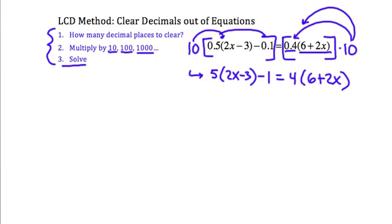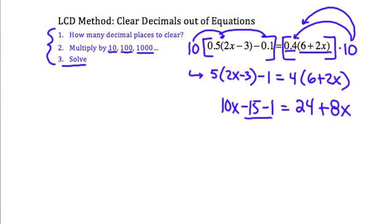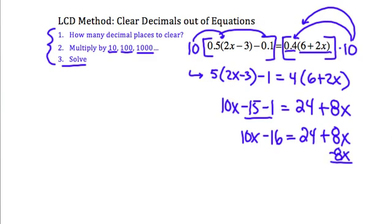I would distribute the 5 on the left: 5 times 2x is 10x, and 5 times negative 3 is minus 15, minus 1. On the right side, distribute the 4, which gives me 24 plus 8x. Now combining like terms on the left side, that's going to be 10x minus 16. I've got variable terms on both sides, so I'll move the smaller one — I'll get rid of this 8x — so minus 8x from both sides. That leaves me with 2x minus 16 equals 24.